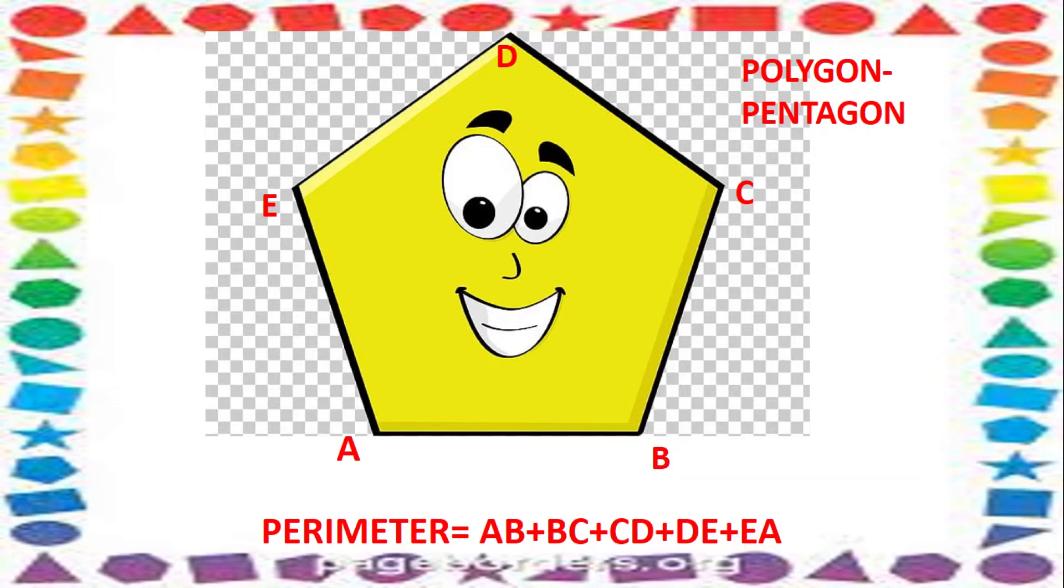Let's test. Can you name this figure? Yes, it's a polygon or a pentagon because it has five sides. First of all, mark the sides and then find the perimeter by adding the sides. So, perimeter is equal to AB plus BC plus CD plus DE plus EA.